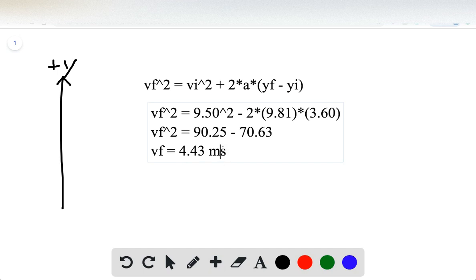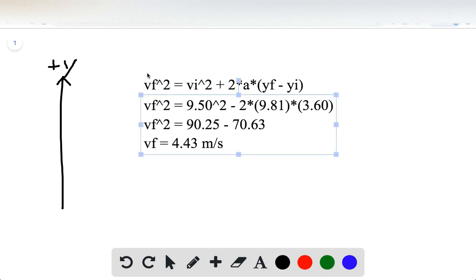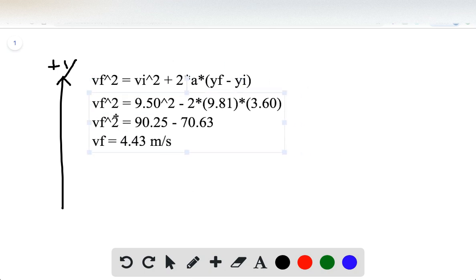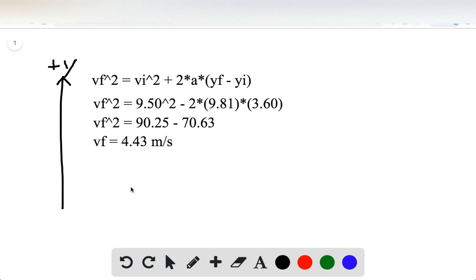Adding these two together and taking the square root to three significant figures, we get 4.43 meters per second. That's part a. Now for part b, we want to find how long did it take to reach the ceiling.